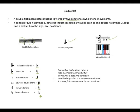When you lower a double sharp, you get one sharp. When you lower a sharp, you get a natural. When you lower or flatten a natural, you get a flat. Remember: a sharp raises a note by a semitone, a flat lowers a note by a semitone, a double sharp raises by two semitones, and a double flat lowers by two semitones.